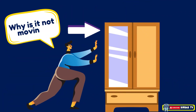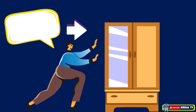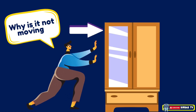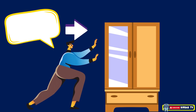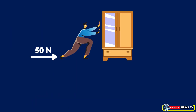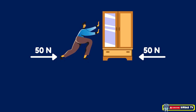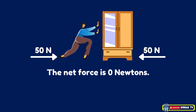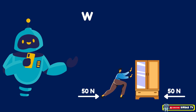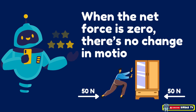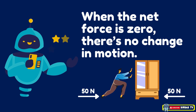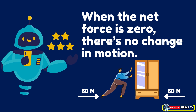Imagine you are pushing a heavy cabinet with all your strength, but it still does not move. Why? Because the force of your push is equal to the opposing frictional force between the cabinet and the floor. If you push the cabinet to the right with 50 Newtons, the floor pushes back with an equal 50 Newtons of frictional force to the left. Since these two forces are equal and opposite, they cancel each other out. Net force equals 50 Newtons minus 50 Newtons, which gives us zero Newtons — no change in motion. The cabinet stays still. That's a perfect example of balanced forces keeping an object at rest.